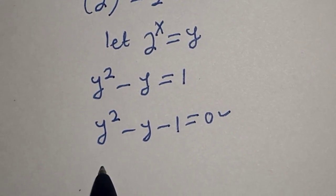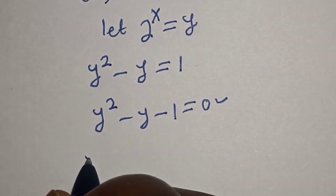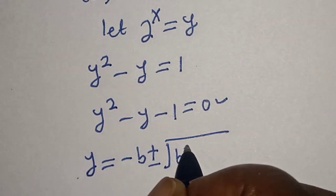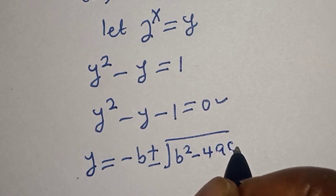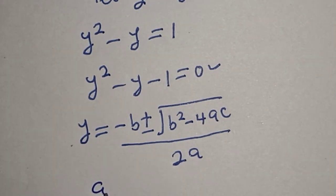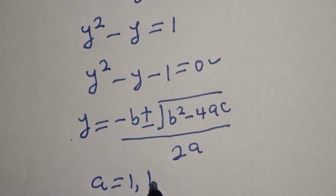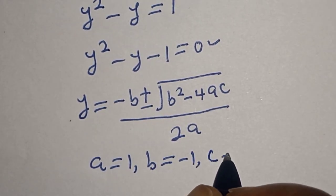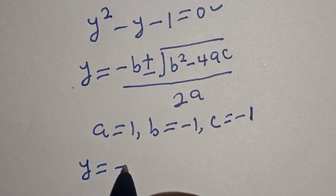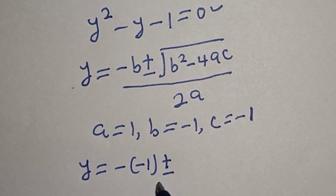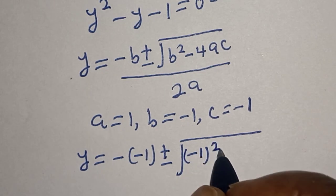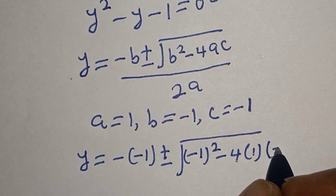This quadratic equation can be solved using the quadratic formula: y is equal to negative b plus or minus square root of b squared minus 4ac, divided by 2a. From this equation, a is equal to 1, b is equal to negative 1, and c is equal to negative 1. So y equals negative of negative 1, plus or minus square root of negative 1 squared minus 4 times 1 times negative 1.